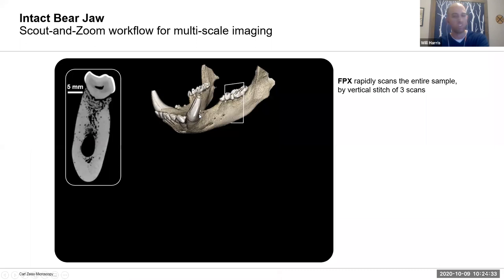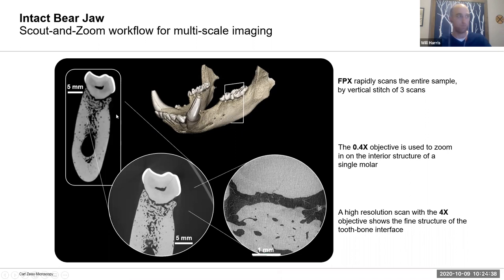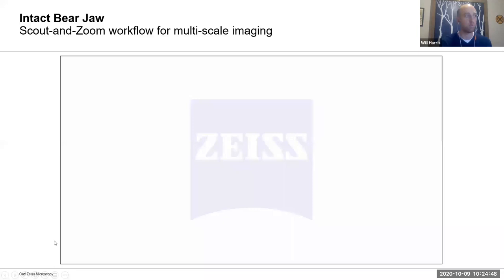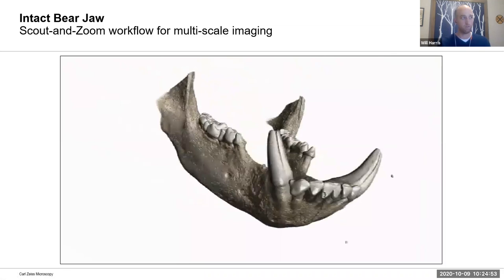Similarly in the biological world, this is a bear jaw — about six inches in the long dimension, so a fairly large object. If you're interested in the interface between the tooth and the bone and want to see that at very high resolution, you can zoom in. This is the way we normally collect data: you want to get an overview first, you've got some context and navigational guide of where you're going.